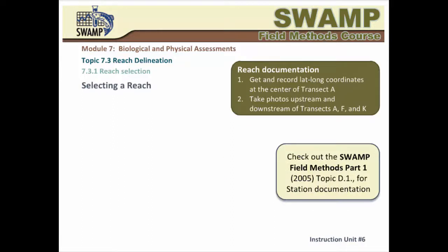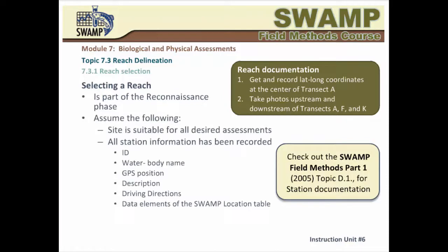The process of selecting a reach to assess began during the reconnaissance phase. It is assumed that the site has been identified as suitable for all desired assessments, and that all station information has been recorded, including ID, water body name, GPS position, description, driving directions, and all other data elements in the SWAMP location table. While you walk the reach, estimate the average wetted width to determine if it is more or less than ten meters. Document the location of transect A by recording latitude and longitude coordinates, and take upstream and downstream pictures from transect A, as well as pictures at transects F and K.